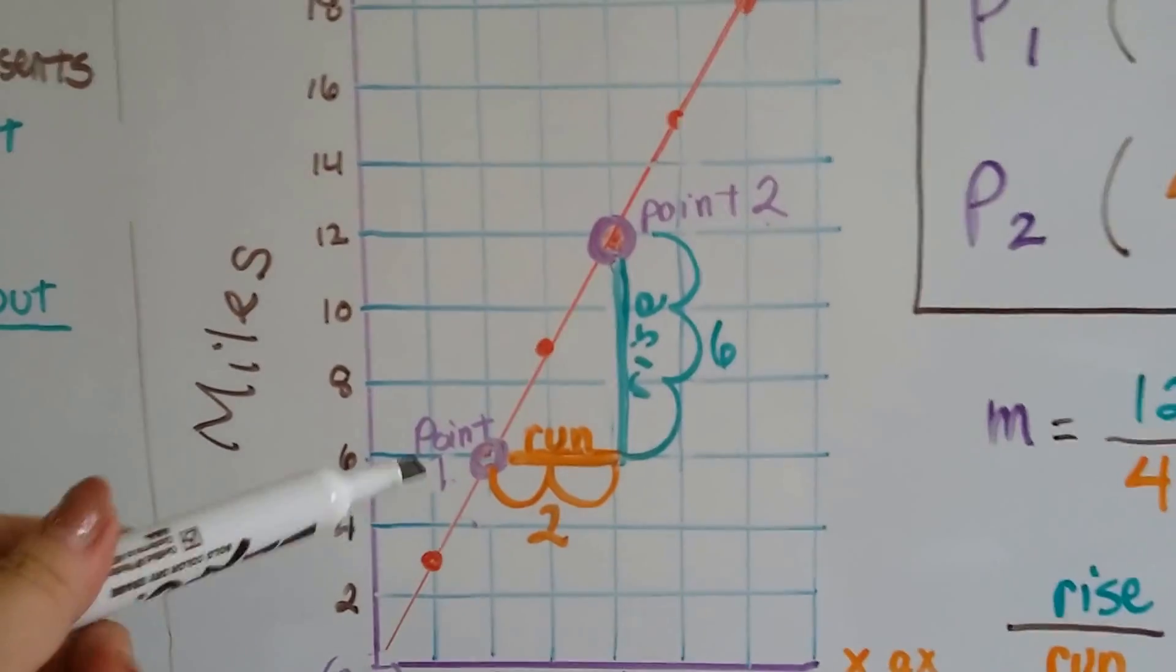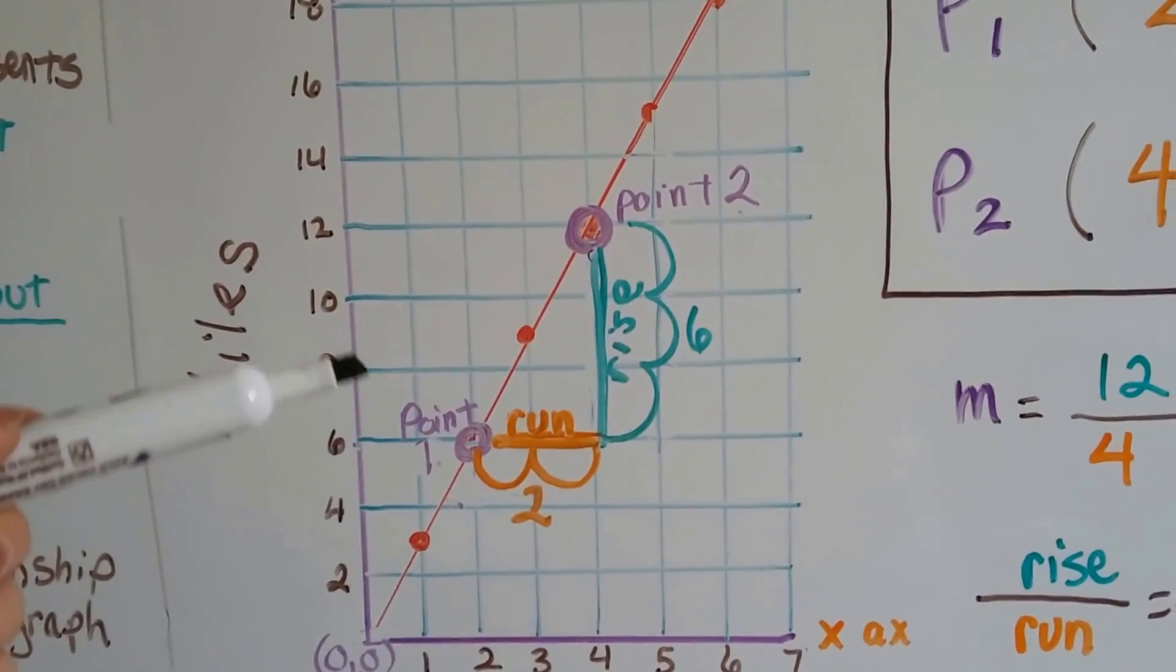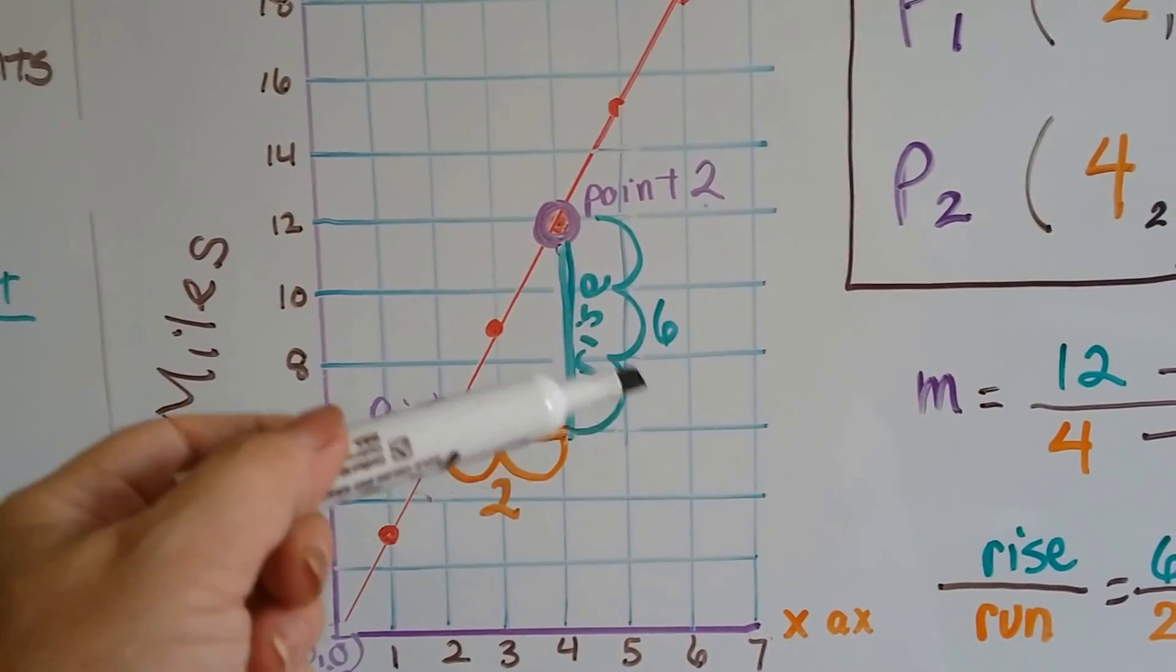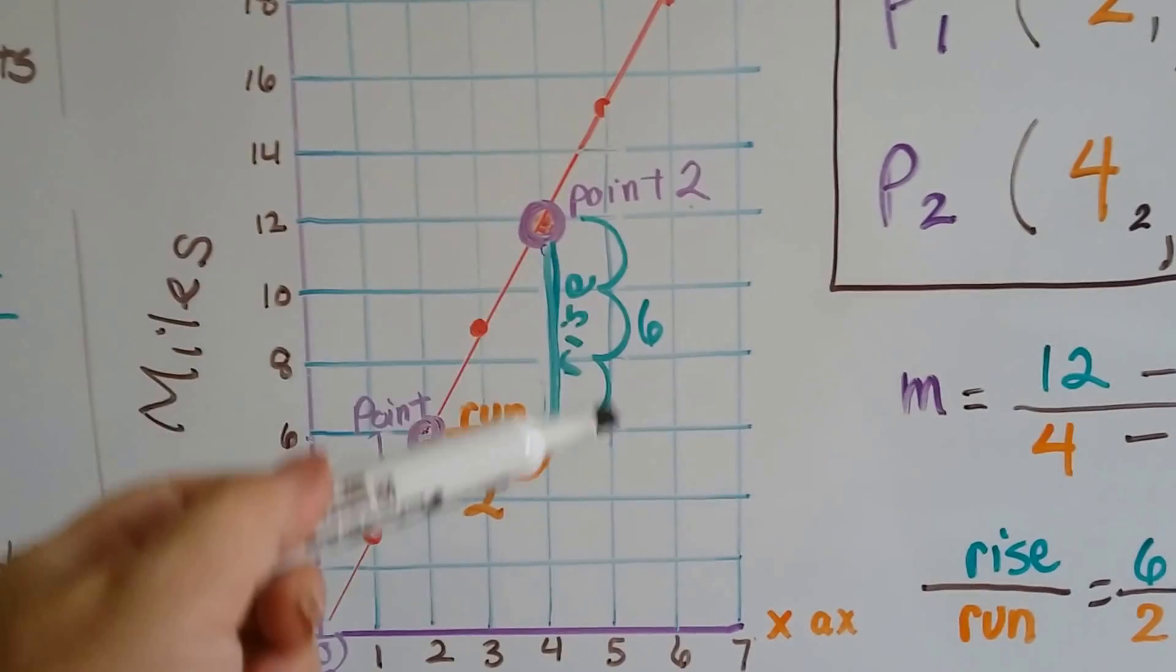We can see the rise over the run just by looking at the line. This jumps by 2's: 6, 8, 10, 12. So 3 jumps is 2, 4, 6 for our rise. That's our vertical change.